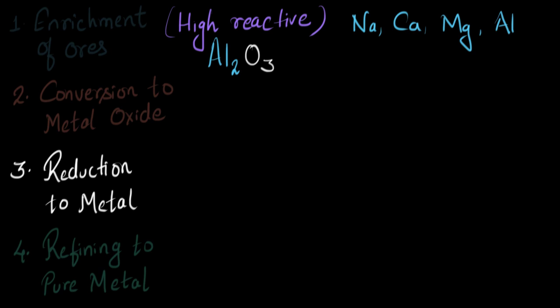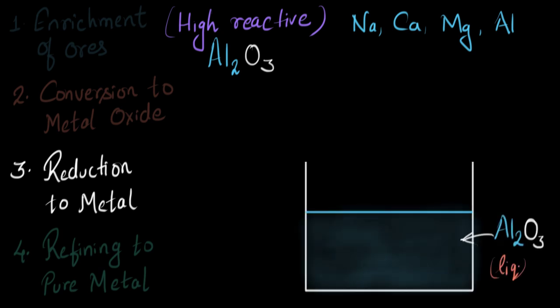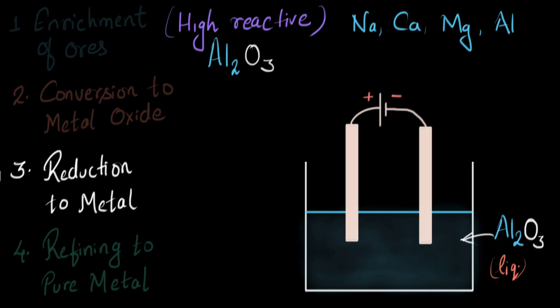So first of all, I will take aluminium oxide in molten state in a container, in liquid state. And the reason why I'm doing it is because after I have provided electricity, these will break into their ions and the ions can easily flow in a liquid state. Now to pass electricity, I will insert certain electrodes that will be connected to a battery. This is the positive electrode and this is the negative electrode. Now, once I pass electricity, the aluminium oxide compound, this is going to break into its ions.